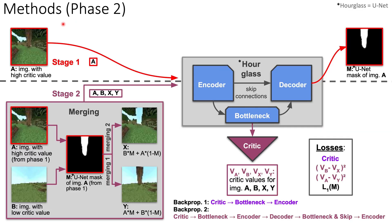Here is the second training phase of our approach. The hourglass network is shown here. It has encoder, bottleneck, and decoder parts, as well as skip connections. As you can see, the bottleneck has two heads: one belongs to the critic, and the second goes to the decoder.